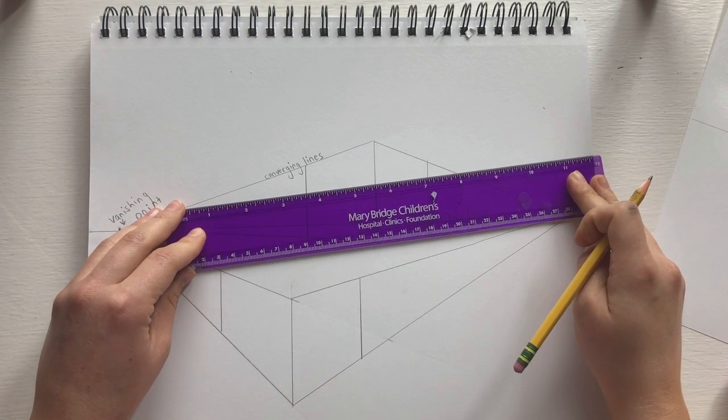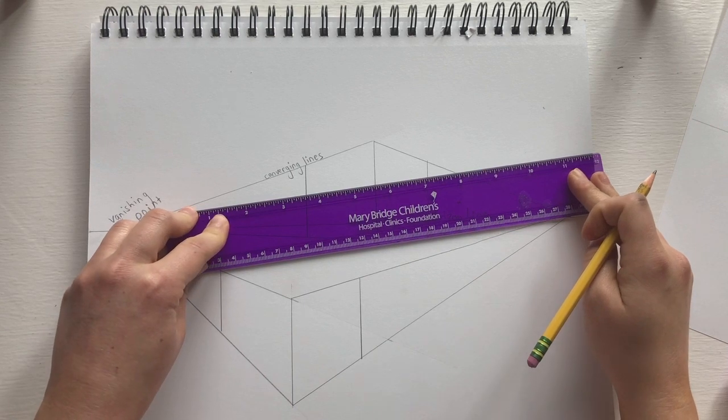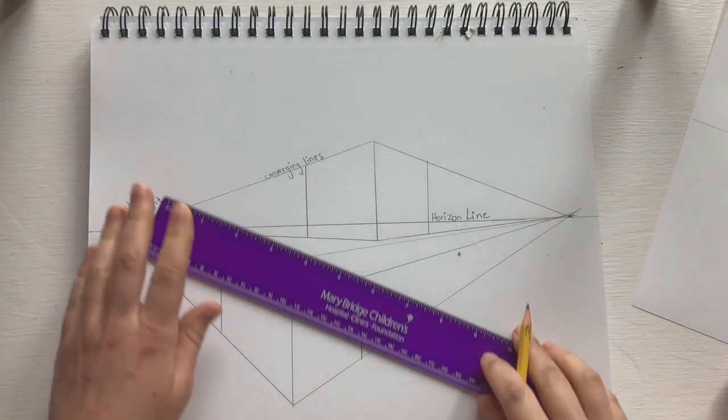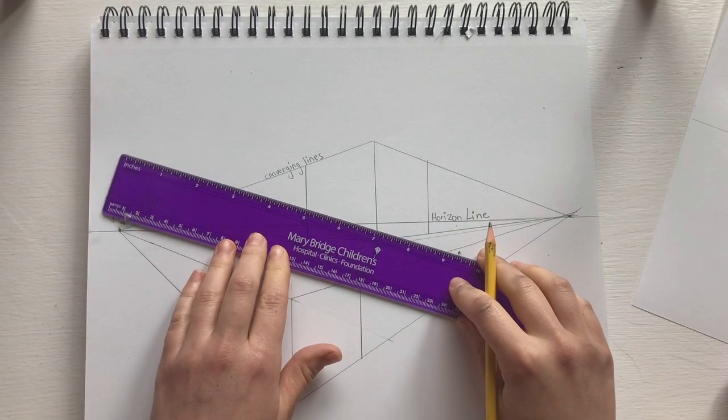Now unlike one-point perspective, we're going to draw from the top corner of the box to the opposite vanishing point on both sides.